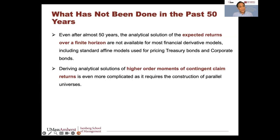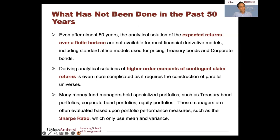What was also not done was higher-order moments of contingent claim returns — if you don't even have the first moment, you don't have higher moments. The need was there: many managers hold treasury bond portfolios, corporate bond portfolios, and equity portfolios with embedded options, and these managers are evaluated based on portfolio performance measures such as Sharpe ratio, which requires mean and variance. Despite all the affine models with closed-form solutions, we did not have formulas for expected returns and variances over a finite horizon.